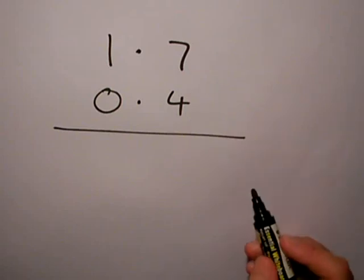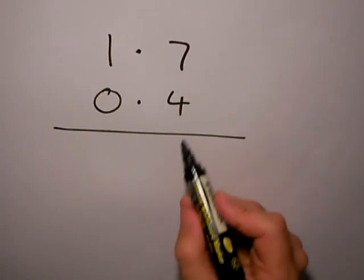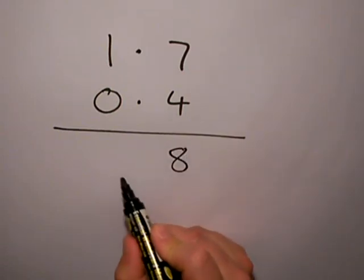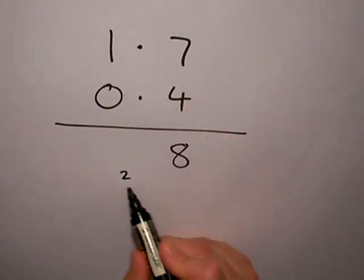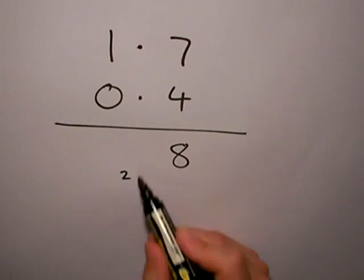So, 4 by 7 we start off with, so 4 times 7 is 28, 8 down, 2 to carry. Then we move on to 4 times 1, which is 4. Don't forget the 2 to carry, so that's 4 plus 2 is 6, and I've got no more multiplication to do.